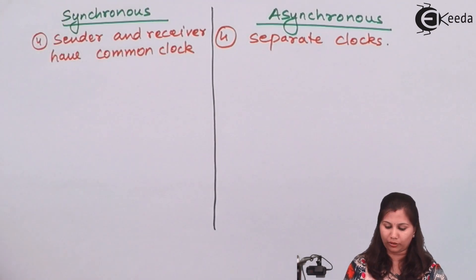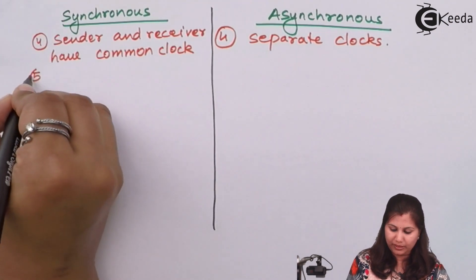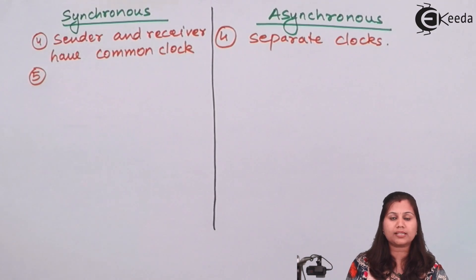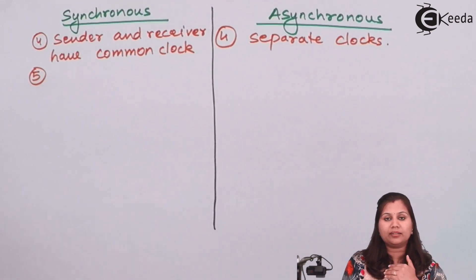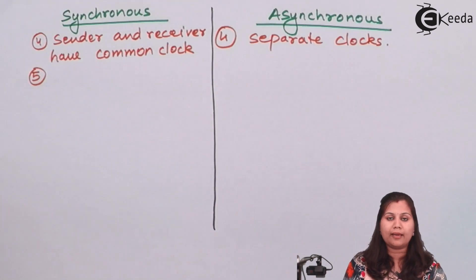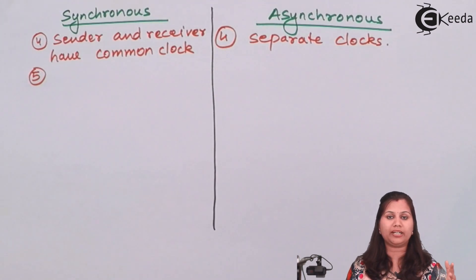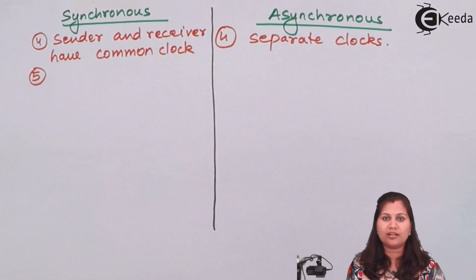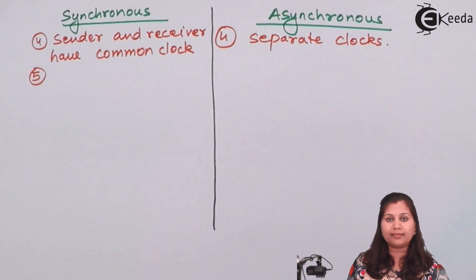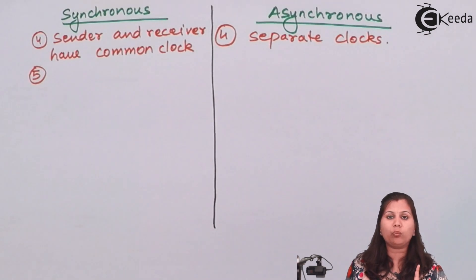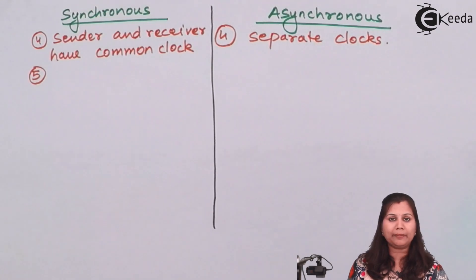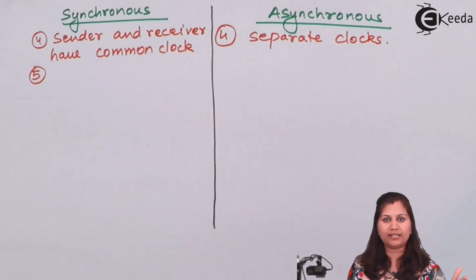The next difference is that in the synchronous method, blocks of data or frames are sent — whenever transmission takes place, blocks or frames of data are transmitted. But in asynchronous, only one bit is transmitted at a time, so data is sent bit by bit, whereas in synchronous, blocks of data are transmitted.